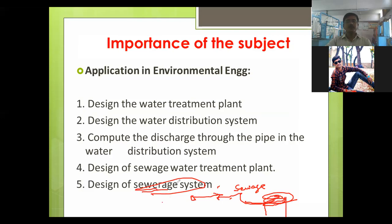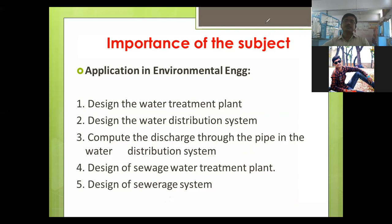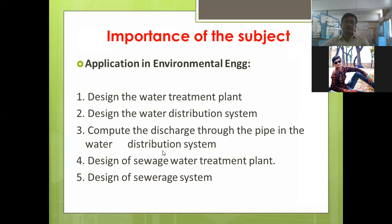For the design of that pipe network — determining what pipe diameter should be used at a particular location — is decided using knowledge of fluid mechanics. These are the different applications of fluid mechanics, and this is the importance of this subject from a civil engineering point of view. Without it, you cannot do the application work of environmental engineering or water resources engineering.